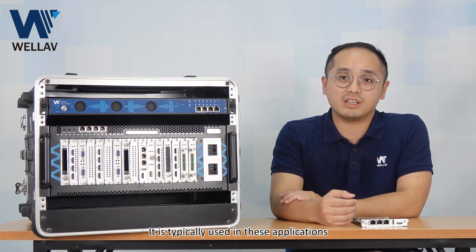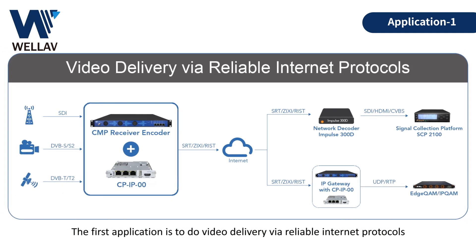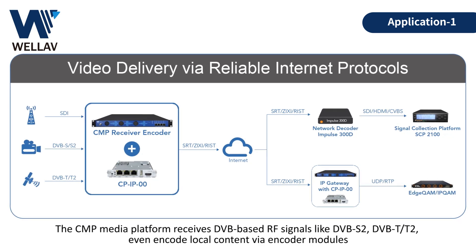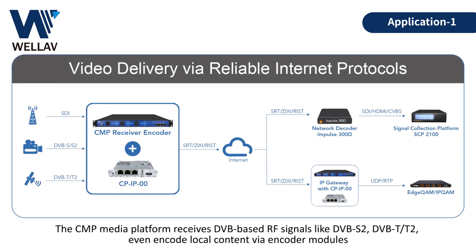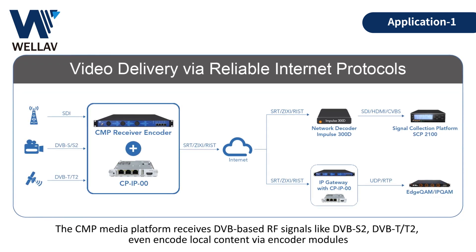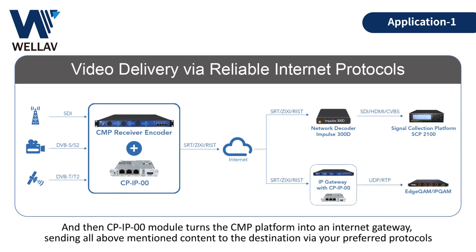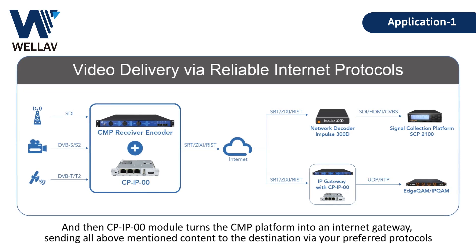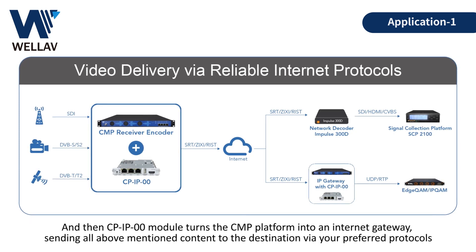It is typically used in these applications. The first application is to do video delivery via reliable internet protocols. The CMP media platform receives DVB-based RF signals like DVB-S2, DVB-T, or T2, or even encodes local content via encoder modules. Then the CMP IP gateway module turns the CMP platform into an internet gateway, sending all above-mentioned content to the destination via your preferred protocols.